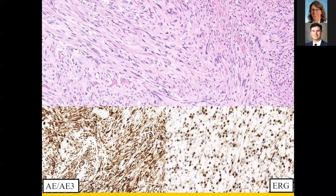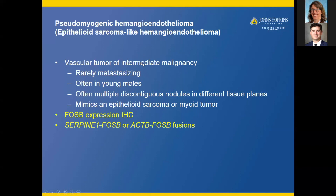Here is a neoplasm showing a spindle cell tumor with bright eosinophilic cytoplasm, expressing keratin and ERG. This is pseudomyogenic hemangioendothelioma, also called epithelioid sarcoma-like hemangioendothelioma — a vascular tumor of intermediate malignancy, rarely metastasizing, generally in young adults, often with multiple discontinuous nodules in different tissue planes, which may mimic an epithelial sarcoma or myoid tumor. Recently, FOSB expression can be identified via IHC, serving as a surrogate for the SERPINE1-FOSB or ACTB-FOSB fusions.